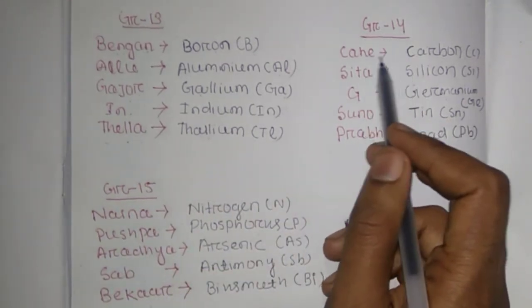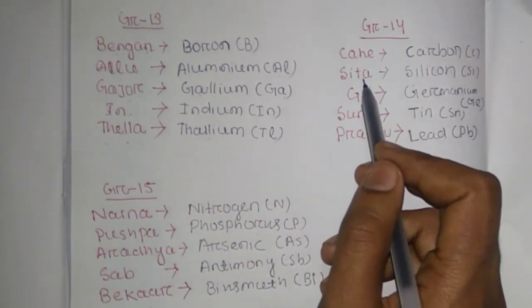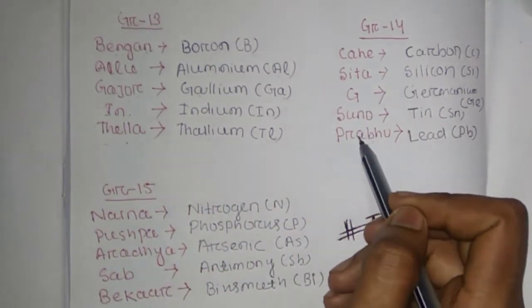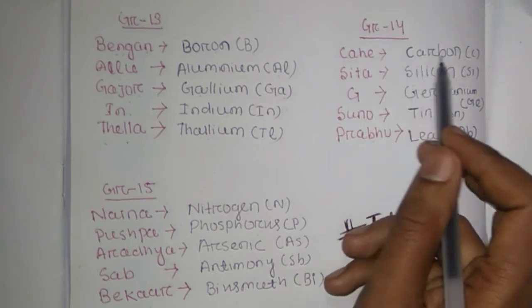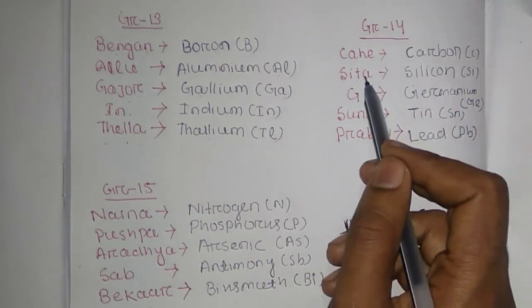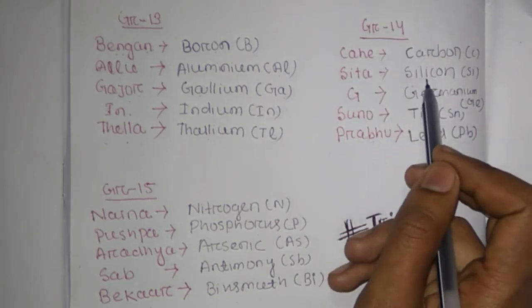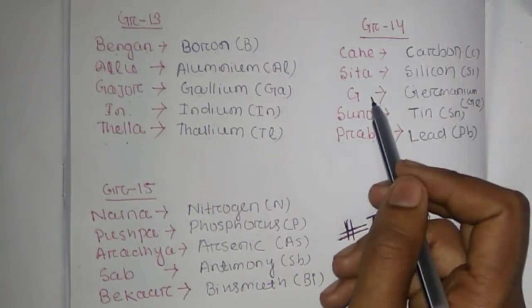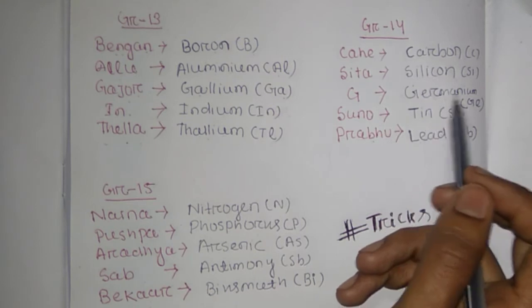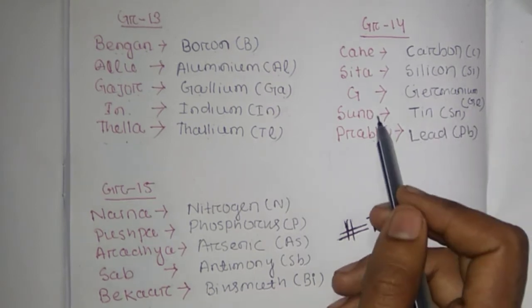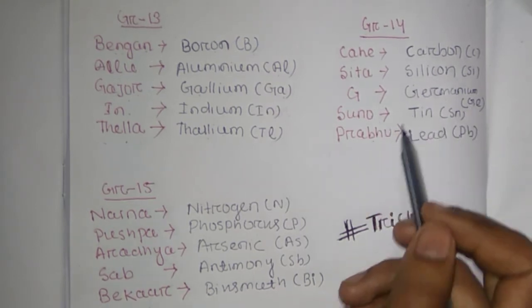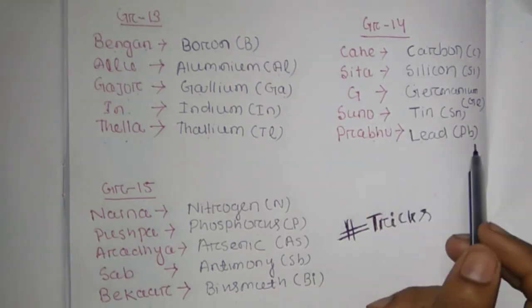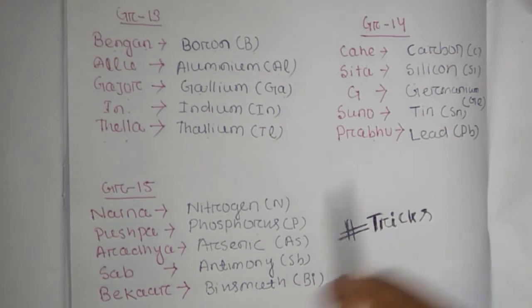Group number 14 trick is: Kahe Sita Ji, Sunna Prabhu. Kahe for Carbon (C), Sita for Silicon (Si), Ji for Germanium (Ge), Sunna for Tin (Sn), Prabhu (Pb) for Lead.